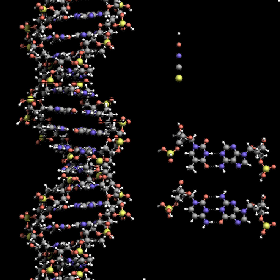DNA can be damaged by many sorts of mutagens, which change the DNA sequence. Mutagens include oxidizing agents, alkylating agents, and high-energy electromagnetic radiation such as ultraviolet light and X-rays. UV light can damage DNA by producing thymine dimers, which are cross-links between pyrimidine bases. Oxidants such as free radicals or hydrogen peroxide produce multiple forms of damage including base modifications and double-strand breaks. A typical human cell contains about 150,000 bases that have suffered oxidative damage. Double-strand breaks are the most dangerous, as they are difficult to repair and can produce point mutations, insertions, deletions, and chromosomal translocations, which can cause cancer.